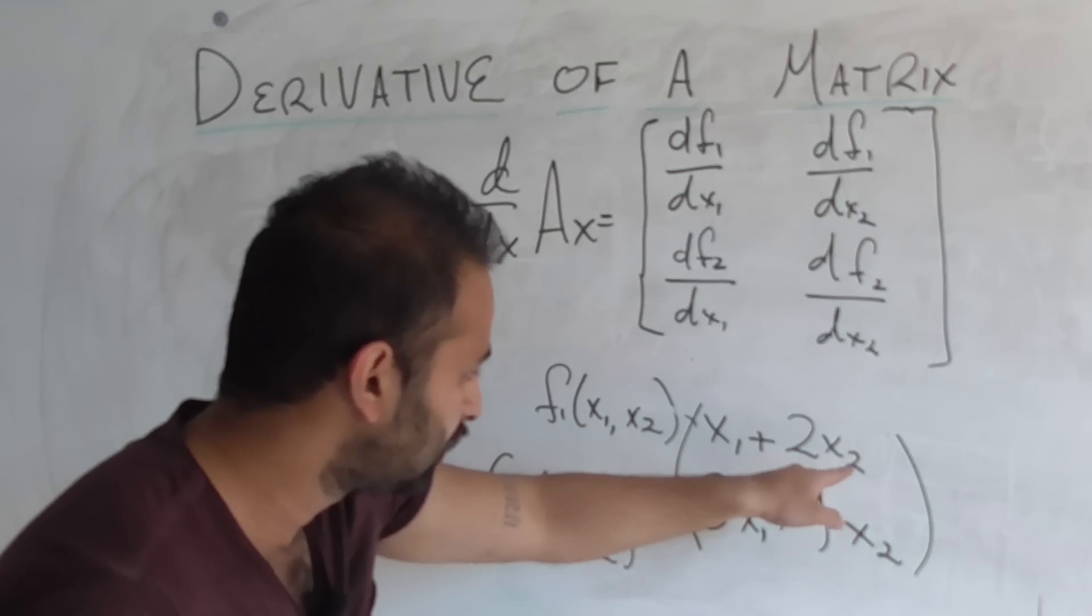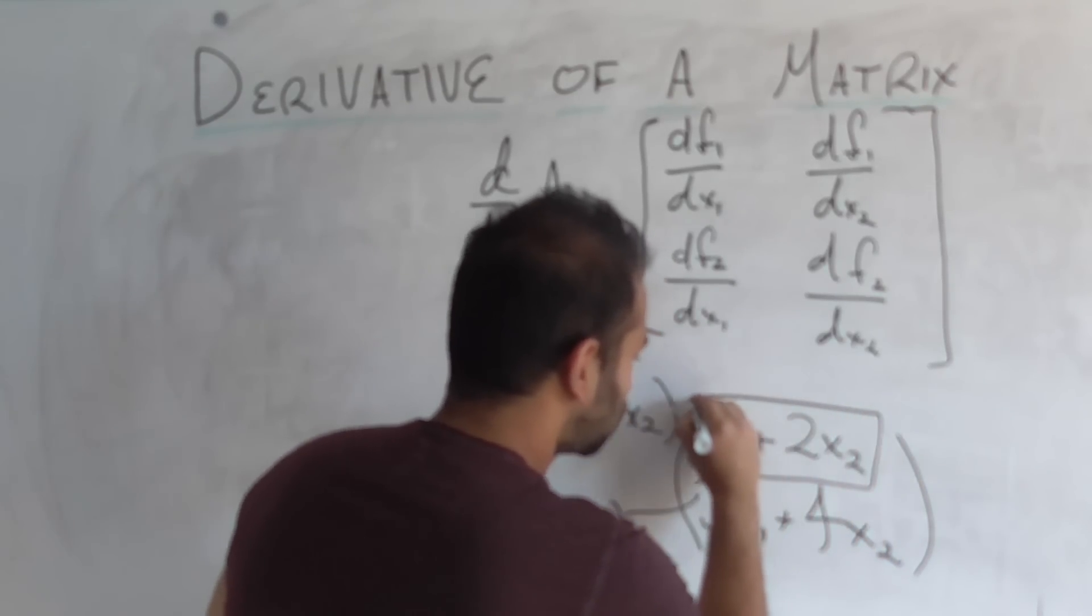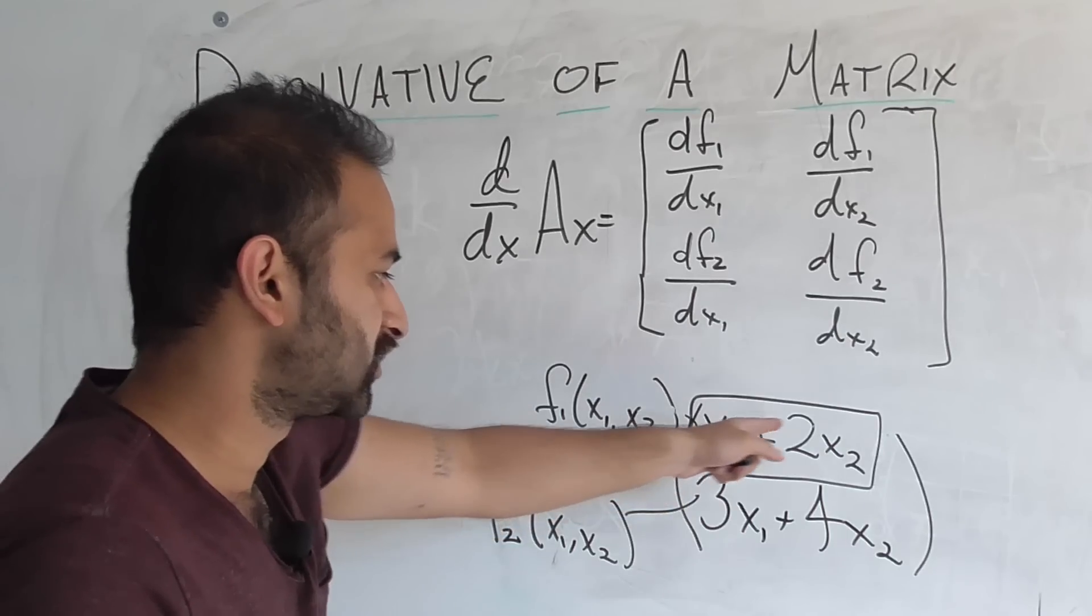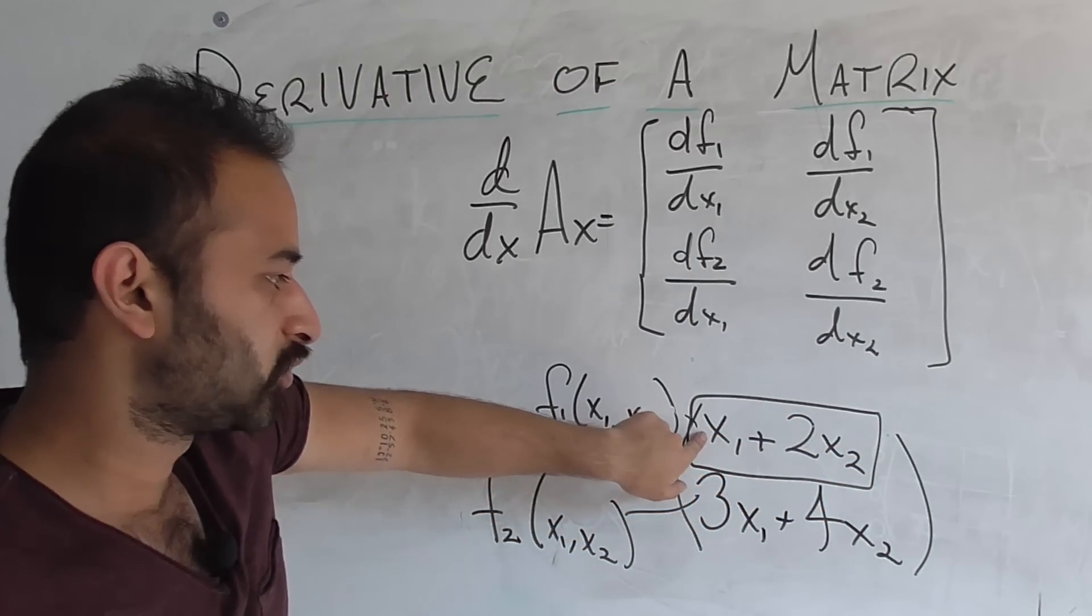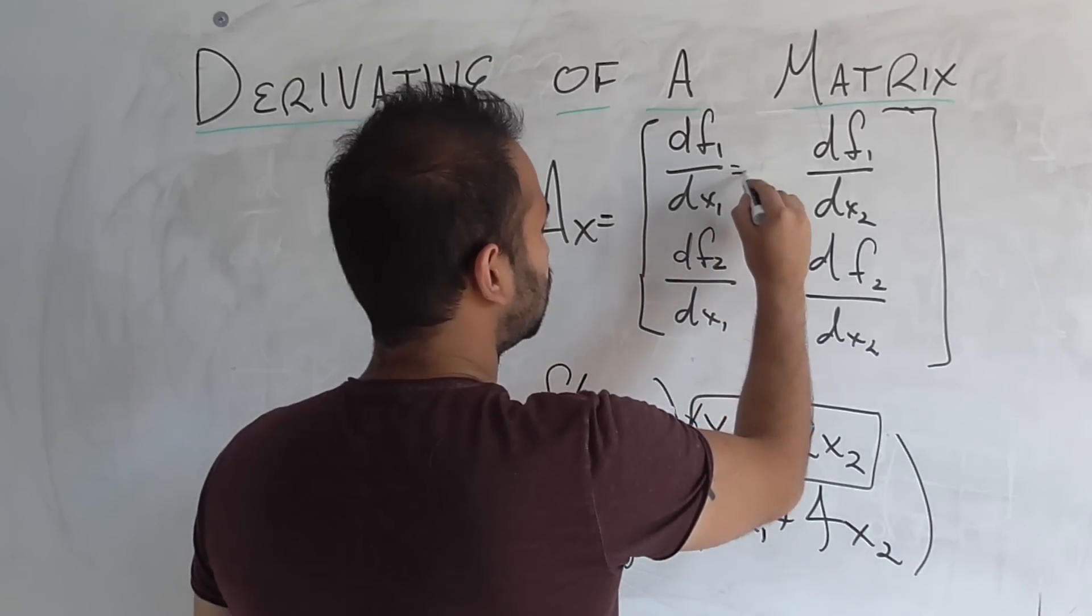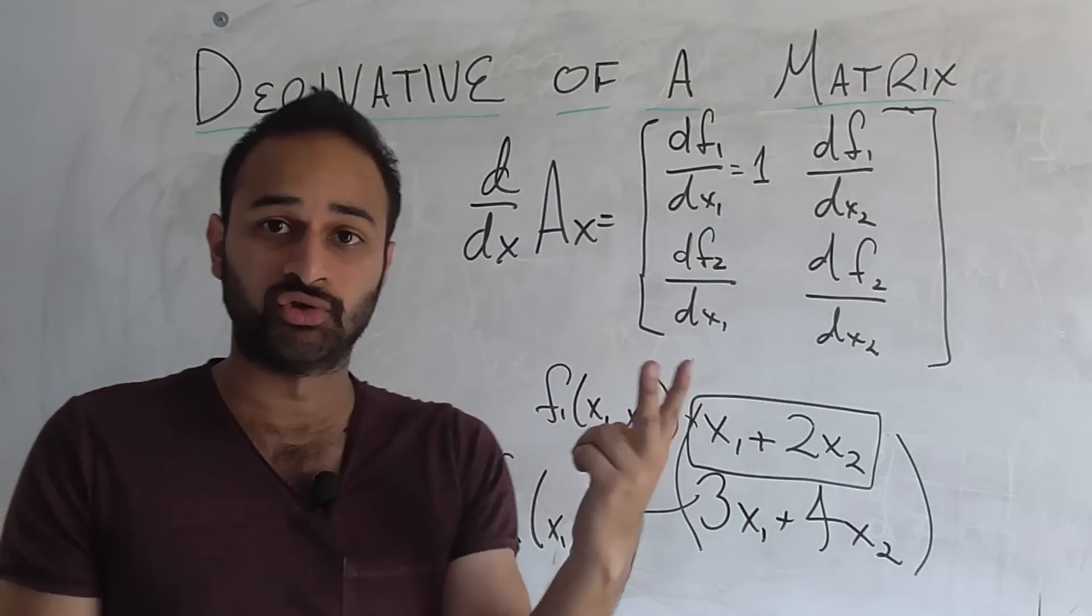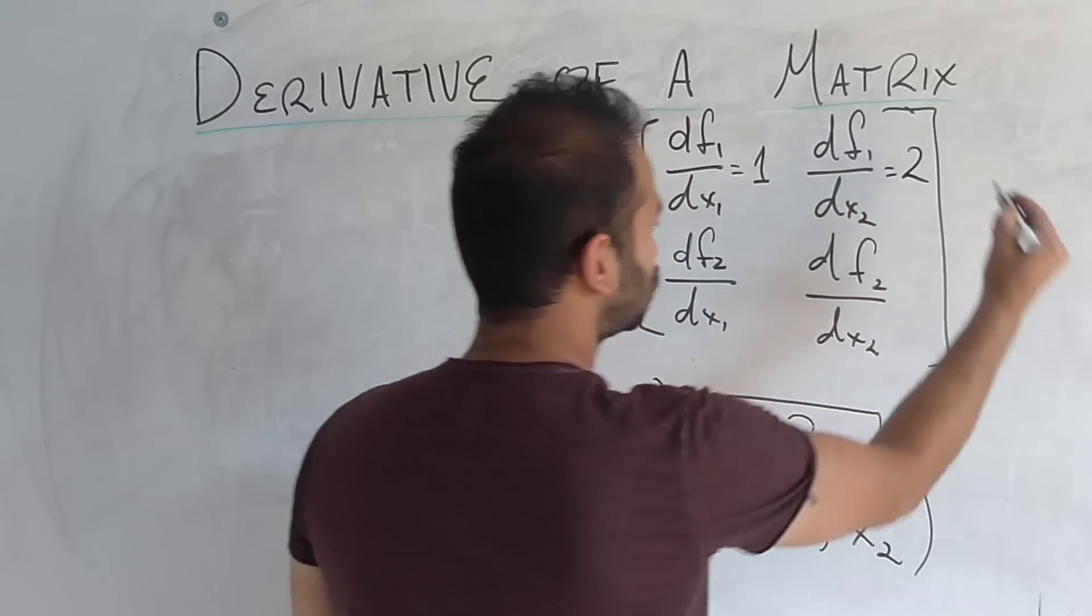Well, here's function f1. What's the derivative of this function with respect to x1? That's really easy. It's just 1, right? Because this part cancels out because we're not interested in x2, and the coefficient of x1 is just 1. So this is going to be equal to 1. Next part, what's the derivative of that same function with respect to x2? In this case, we care about the 2, so this is going to be equal to 2.